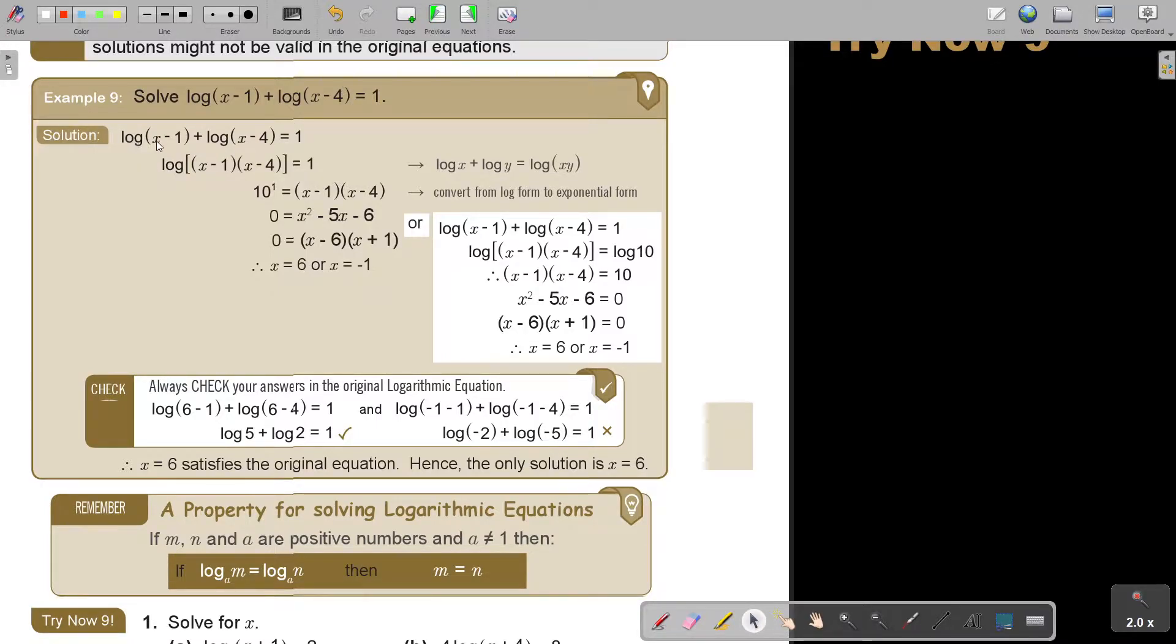Now, the first thing what I have to do is I must make this one term. Now, how do I do? If it's a plus, I can write one word and I multiply the X minus 1 and the X minus 4. I use that rule. Then, it's the product rule.